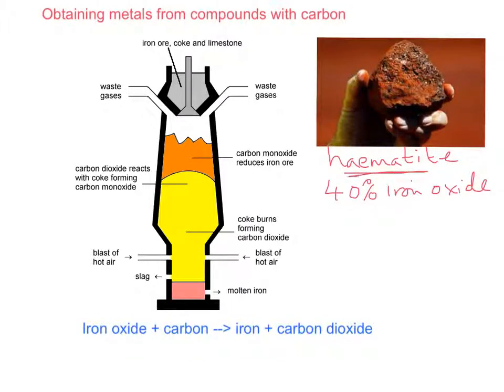The hematite is added to the blast furnace at the top along with coke which makes it into iron. The limestone is added to get rid of the waste. So it has to be added even though it isn't used to make iron.